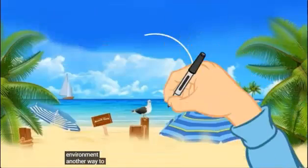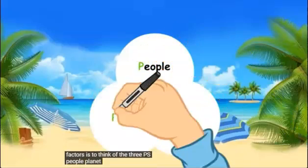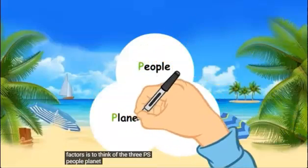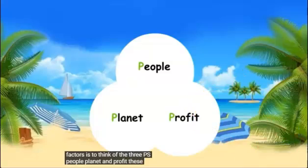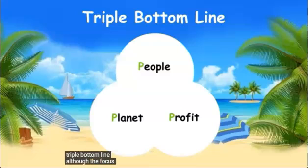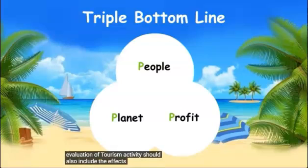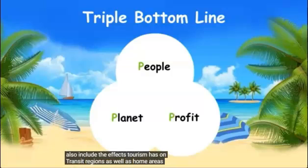Another way to remember these three factors is to think of the three P's: people, planet, and profit. These three factors are also referred to as the triple bottom line. Although the focus is usually on the triple bottom line of tourist destinations, an environmental evaluation of tourism activity should also include the effects tourism has on transit regions as well as home areas.